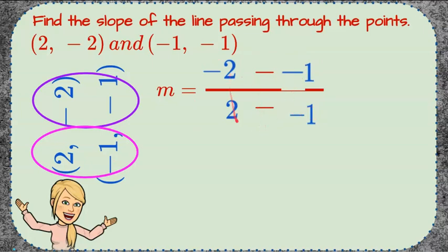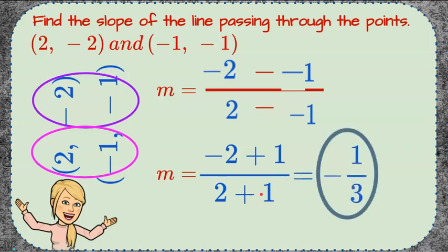So we're going to rewrite this because we have subtract to negative. So we're going to rewrite it to add the opposite. So negative 2, change subtract to add, opposite of negative 1 is positive 1. 2, change subtract to add, negative 1 to positive 1. So keep change opposite when you're subtracting by negative. Negative 2 plus 1 is negative 1. 2 plus 1 is 3. So our slope is negative 1 third.